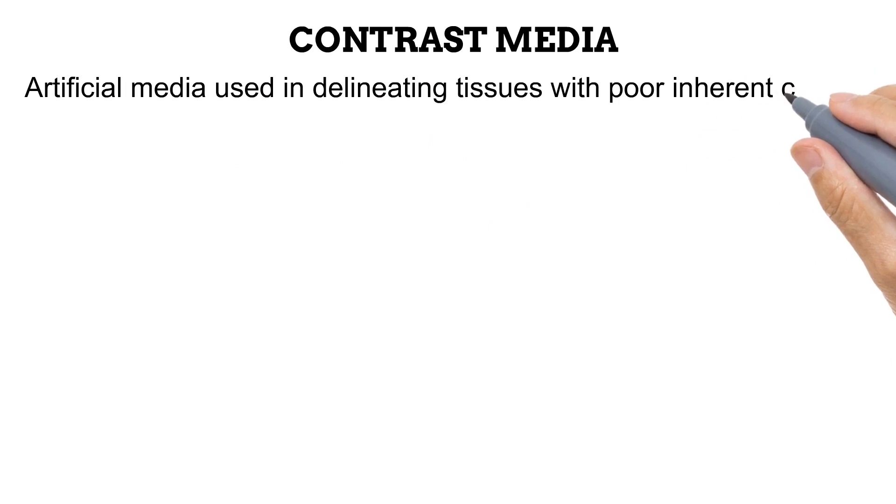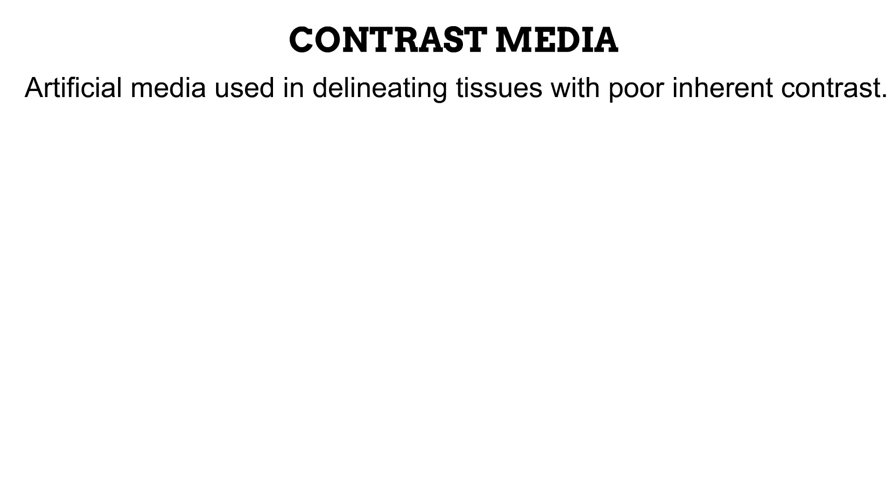In the video on radiographic contrast in our radiographic imaging series, we learned that differences in tissue thickness and other characteristics of tissues determine how much radiographic contrast is produced. This means that when there is a high difference in the structure of tissues, like how bones and fat are different, great contrast is recorded on the image — a great difference in densities. Now, what happens when there is a low difference between different anatomical structures and you need an image? Contrast media is employed. Contrast media are artificial media used in delineating or outlining tissues that naturally have a low subject contrast — body parts with structures that are similar in appearance. Contrast media increases the subject contrast in these body parts.